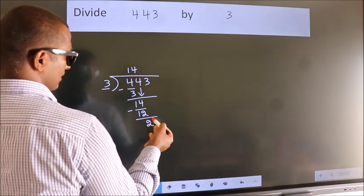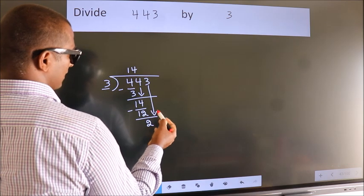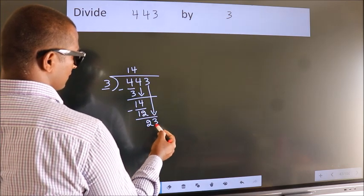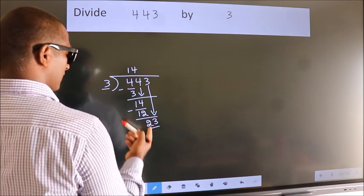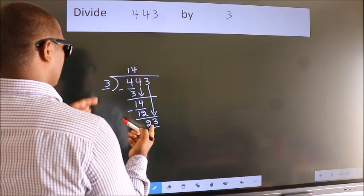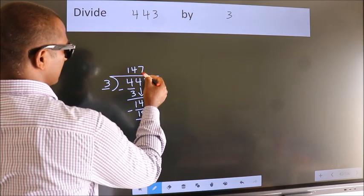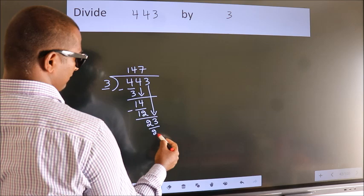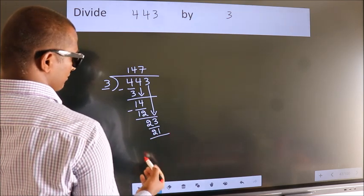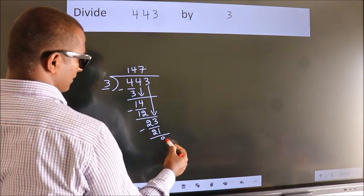After this, bring down the next number. So, 3 down. So, 23. A number close to 23 in the 3 table is 3 times 7 is 21. Now, we subtract. We get 2.